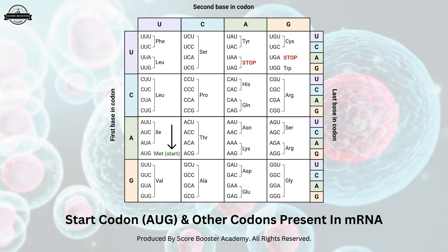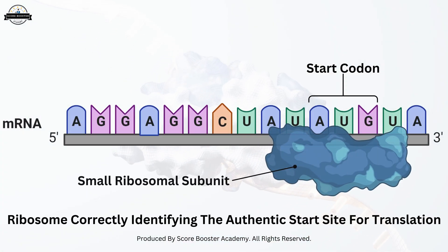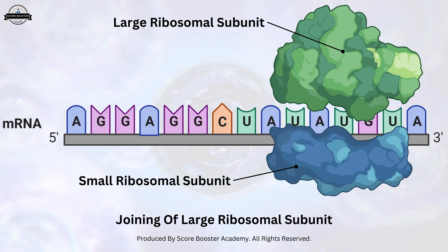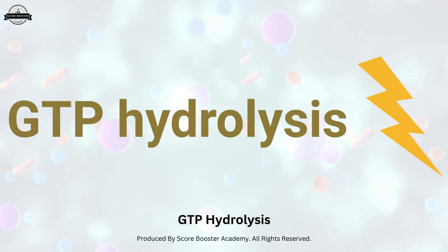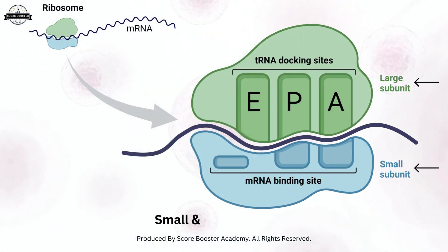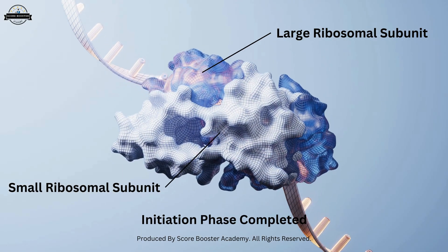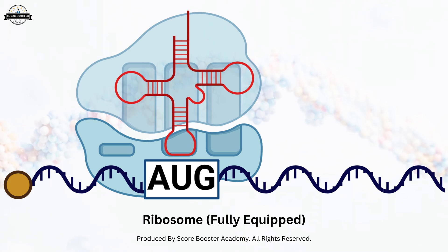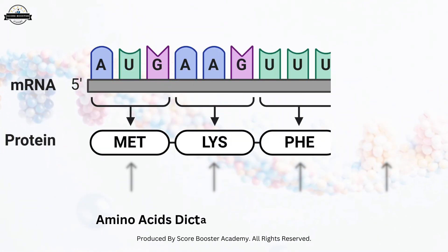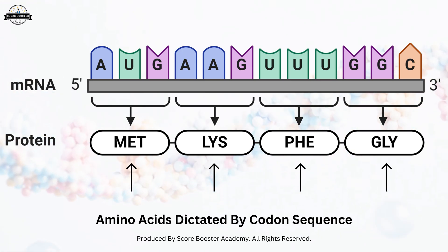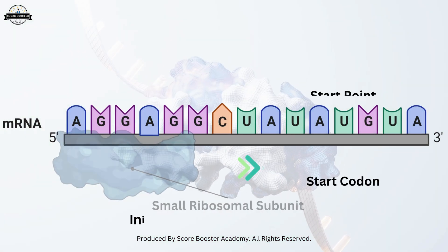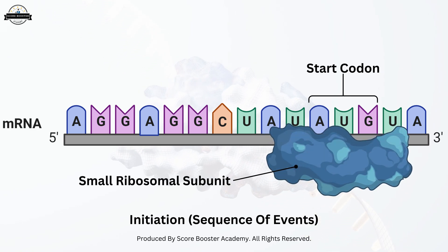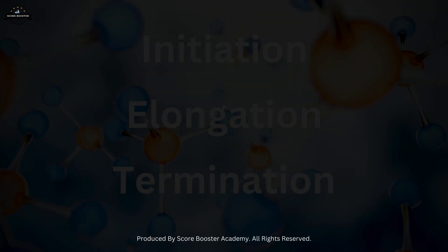Upon recognition of the start codon, the complex undergoes a conformational change that facilitates the joining of the large ribosomal subunit. This step is accompanied by the release of initiation factors, a process that requires GTP hydrolysis. With the assembly of the complete ribosome consisting of the small and large subunits, the initiation phase concludes, setting the stage for the elongation phase. The ribosome is now fully equipped to begin the sequential addition of amino acids as dictated by the codon sequence of the mRNA, translating the genetic code into a functional protein.